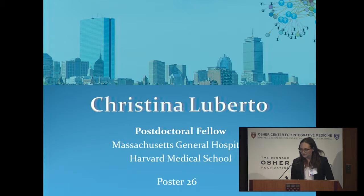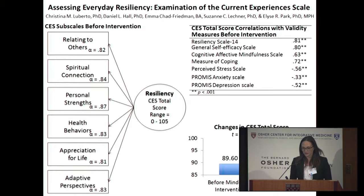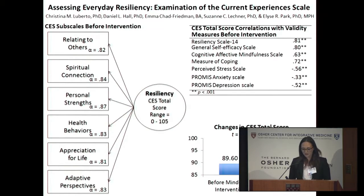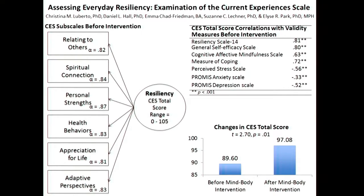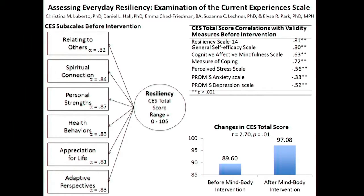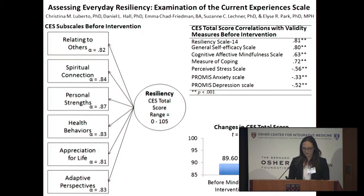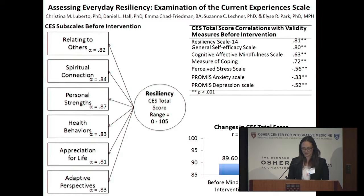Good morning, my name is Christina Liberto, a postdoc at Mass General. Enhanced resiliency is an important outcome of mind-body interventions. Our perspective is that resiliency involves the ability to bounce back from chronic stressors of daily living, not just significant trauma. Our colleagues adapted the Post-Traumatic Growth Inventory to reflect current perceptions of functioning, calling it the Current Experiences Scale, or CES. Our project explored the reliability and validity of the CES as a measure of resiliency. We found it reliably captured six domains of resiliency, scores correlated with other psychosocial measures, and scores significantly increased after a mind-body resiliency intervention. Please come see our poster for further details.